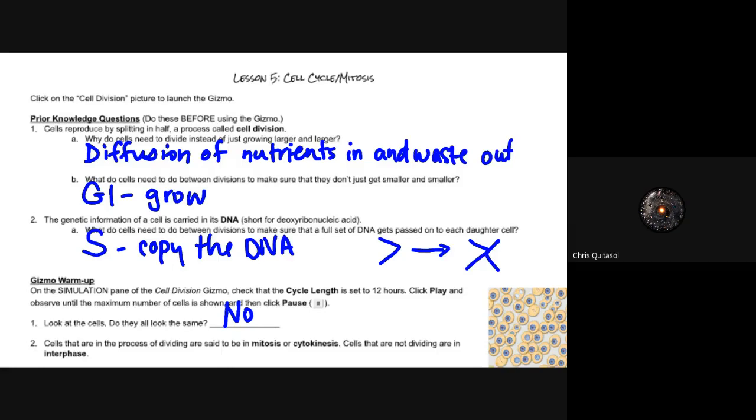What do cells need to do between divisions to make sure they don't just get smaller and smaller? They have to grow in the G1 phase. The genetic information of a cell is carried in its DNA - deoxyribonucleic acid. What do cells need to do to ensure a full set of DNA gets passed on to each daughter cell? They need to synthesize DNA in the S phase. The cell has to go through the process of growing, getting nutrients, making that copy of DNA, and then passing it on to the daughter cells.